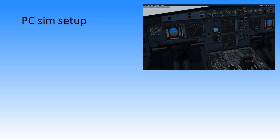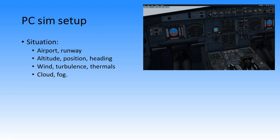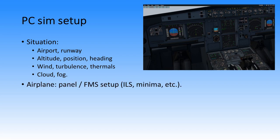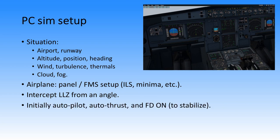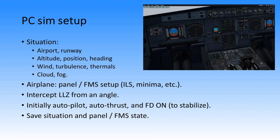To set up the PC simulator: pick an airport and runway. Place the airplane at a certain altitude, position, and heading so you can do a good glide slope and localizer intercept. Set some wind, turbulence, and thermals if you can — that definitely helps with your instrument scan. Also set some cloud and fog. For the airplane, set up the panel state and FMS setup such as ILS minima. Initially turn on autopilot, autothrust, and flight director because once you load a situation the aircraft needs to stabilize. Then save the situation, panel state, and FMS state.